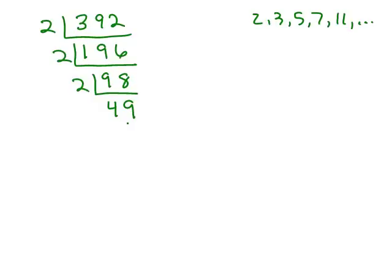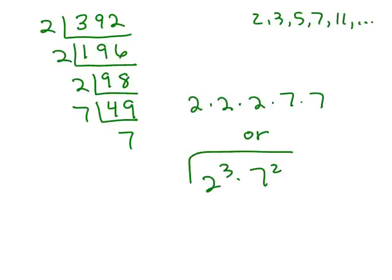At this point, you look at the next prime and see if it goes into it. Does 3 go into it? No. Look at the next prime, 5. Does it go into it? No. Next prime is 7, and you're done when the last number is a prime number. So again, same answer, 2 times 2 times 2 times 7 times 7, or 2 cubed times 7 squared. So a few ways to get the prime factorization of a number.